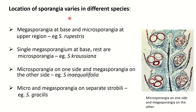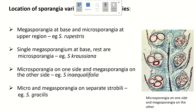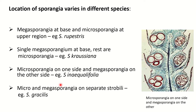The location of sporangia varies in different species. In Selaginella rupestris, megasporangia are at the base and microsporangia at the upper region. In Selaginella kraussiana, there is a single megasporangium at the base and the rest are microsporangia. In Selaginella aquilifolia, microsporangia are on one side and megasporangia on the other. In Selaginella gracilis, micro and megasporangia are borne on separate strobuli.